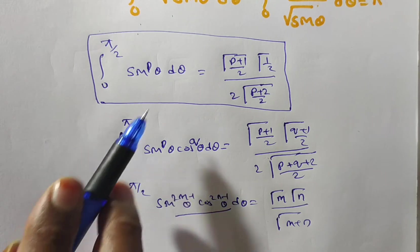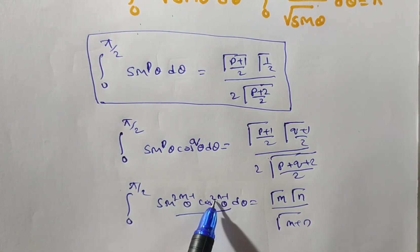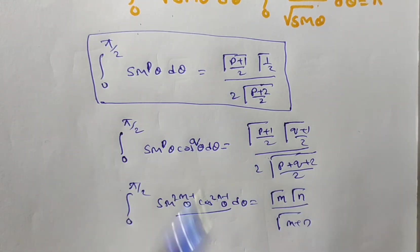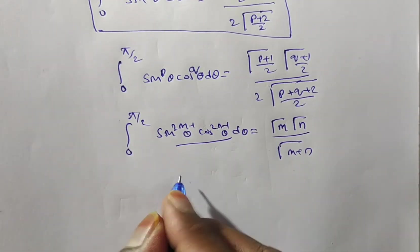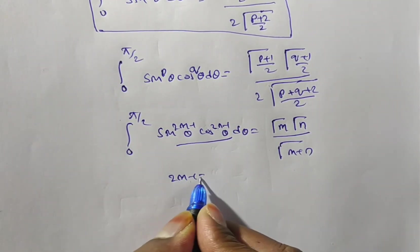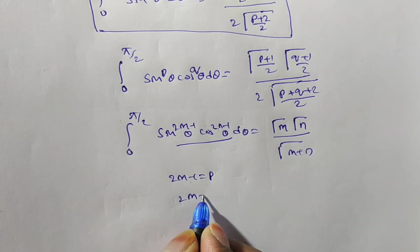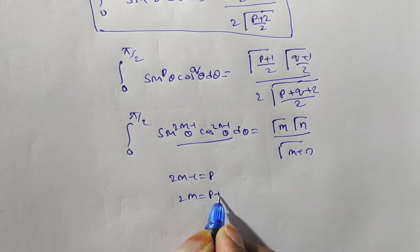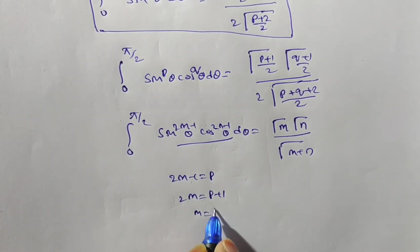Since there is no cosine term, we set 2n−1 = 0, so 2n = 1, giving n = 1/2. Substituting: 2m−1 = p means 2m = p+1, so m = (p+1)/2.